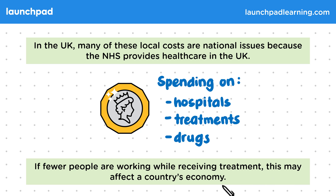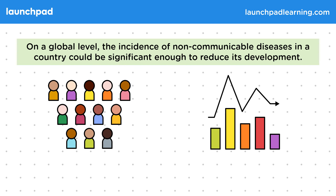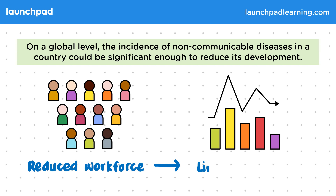On a global level, the incidence of non-communicable diseases in a country could be significant enough to reduce its development. For example, in some countries, medicines and treatments are very expensive and low-income families may be unable to afford them. This could cause a reduced workforce if they are unwell and unable to work, and this could limit the economy.